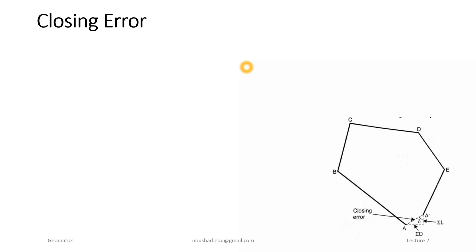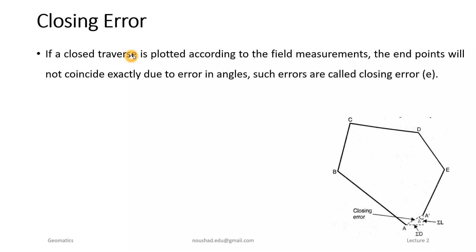If a closed traverse is plotted according to field measurements, the endpoints will not coincide exactly due to errors. These errors are called closing error, and it is denoted by the letter e.